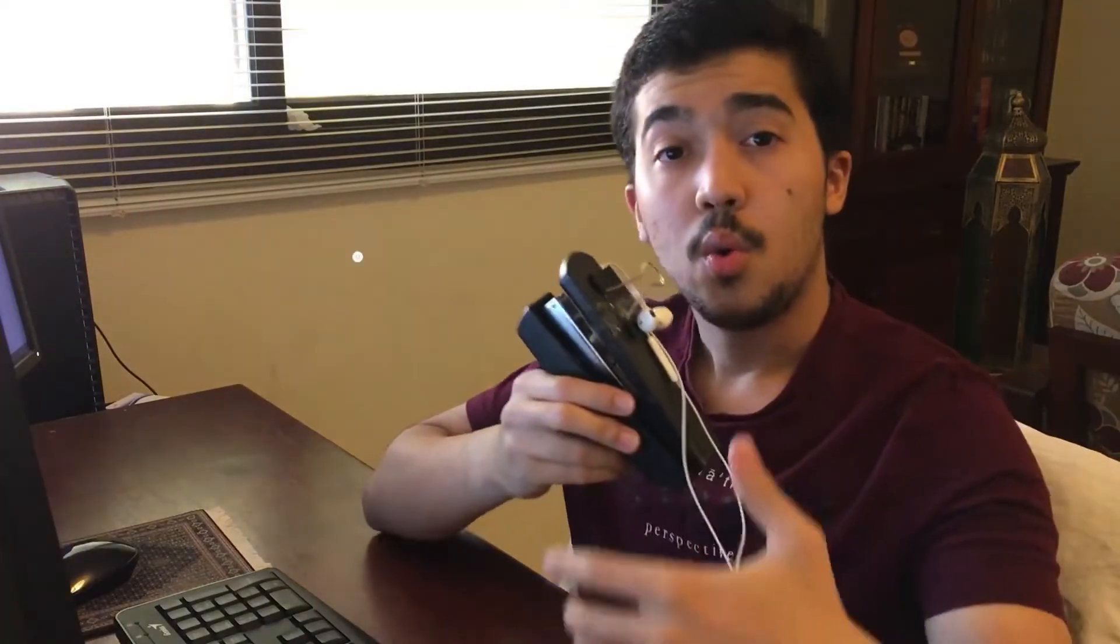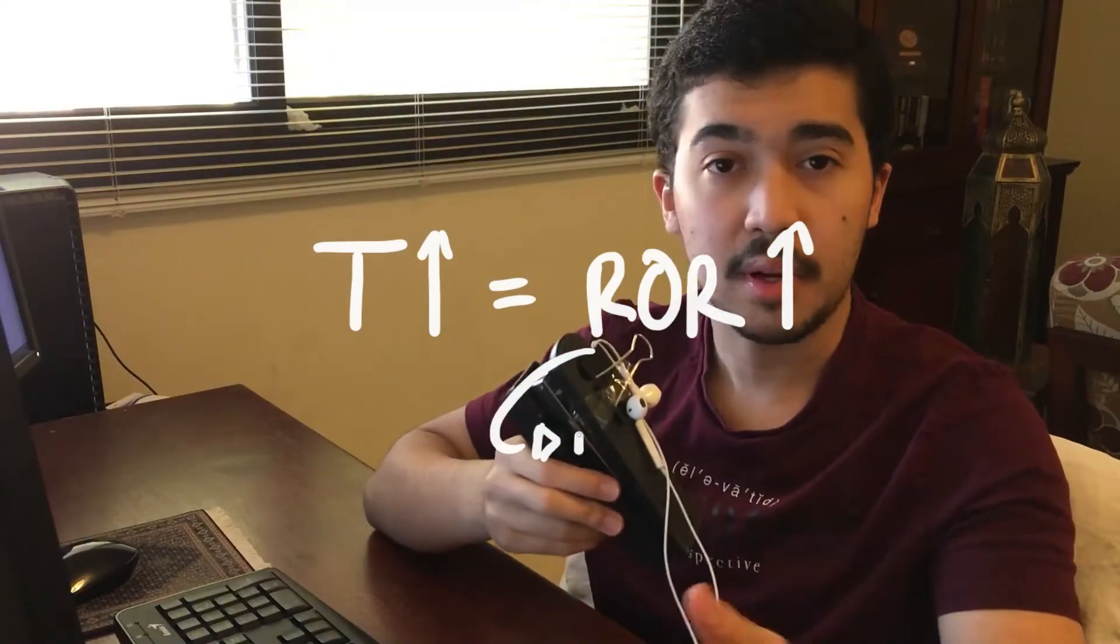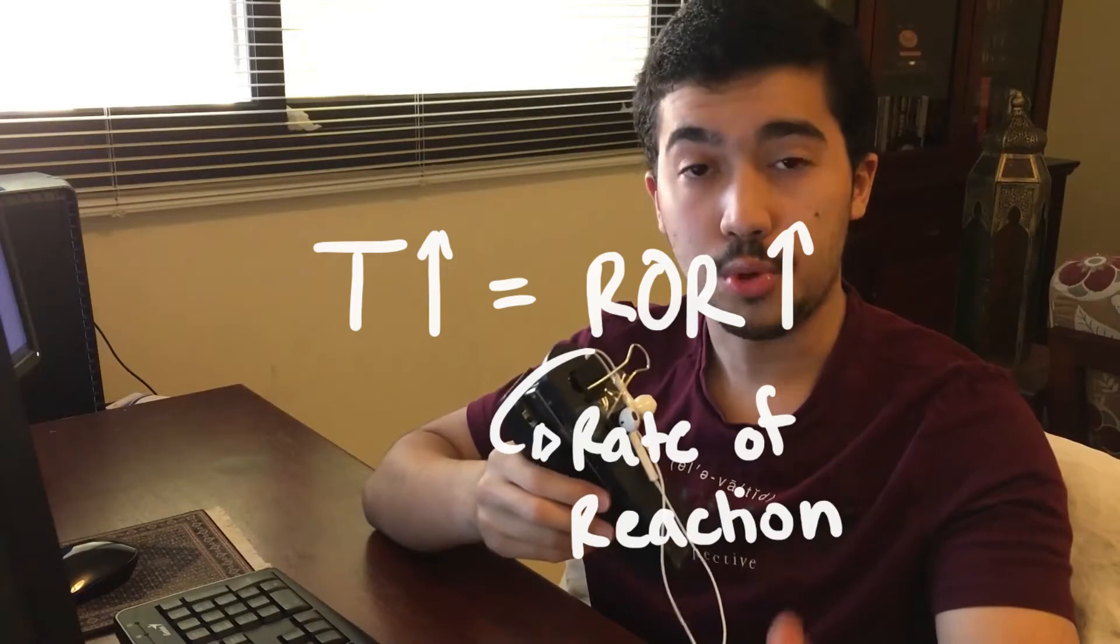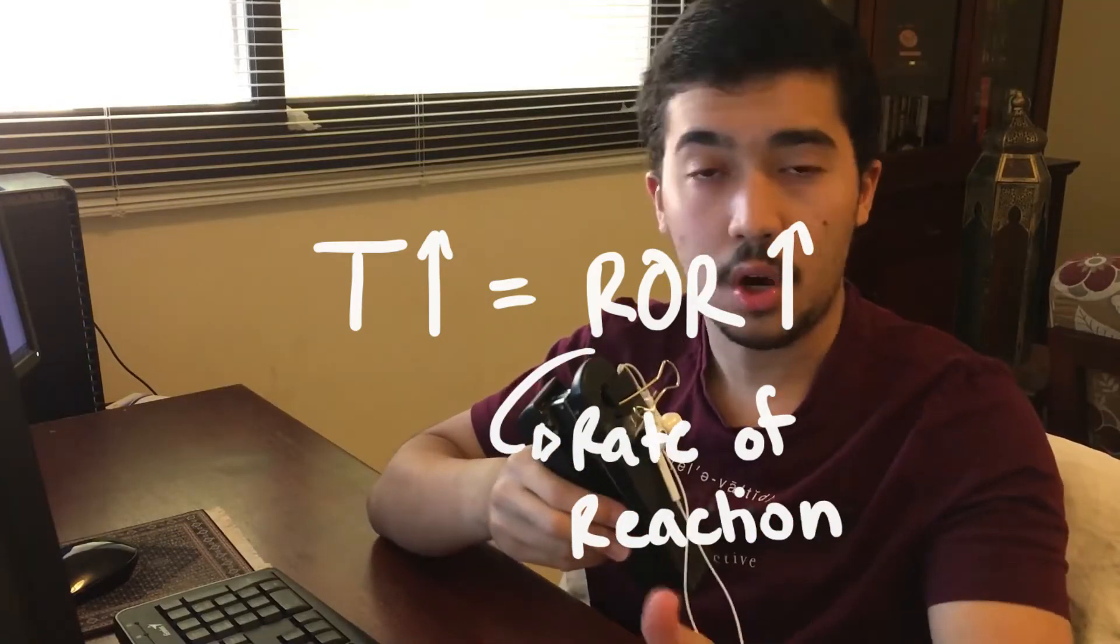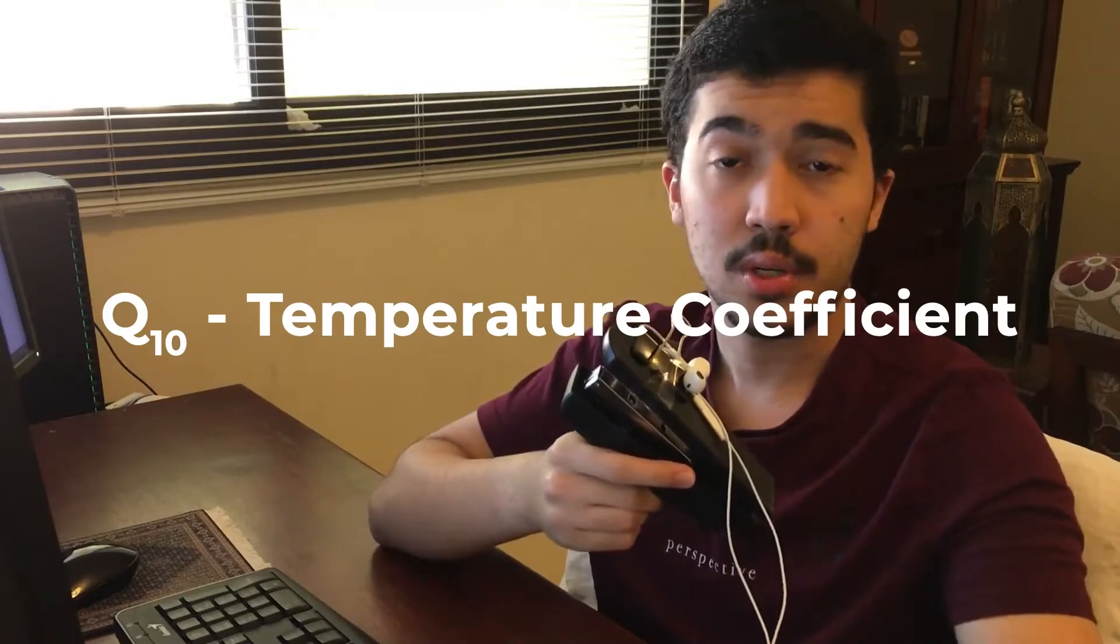We know that physiological processes are temperature sensitive, and what I mean by that is that as the temperature increases, the rate at which the reaction proceeds will increase. As the temperature increases, the rate of reaction will increase. We can quantify this temperature sensitivity of living reactions through the use of the Q10, also known as the temperature coefficient.